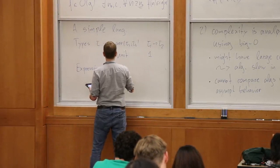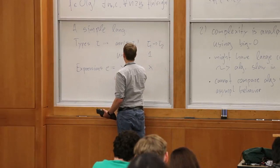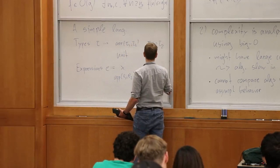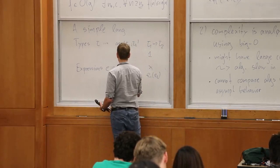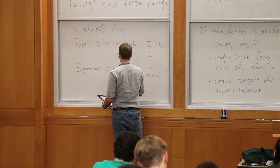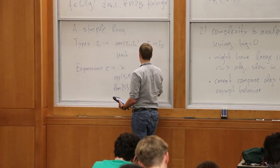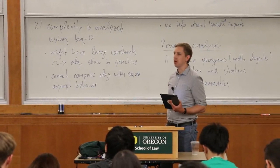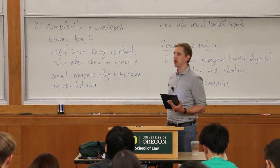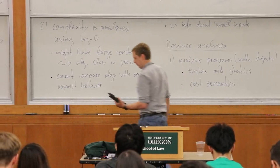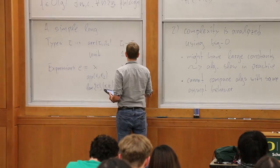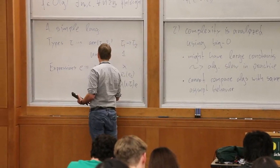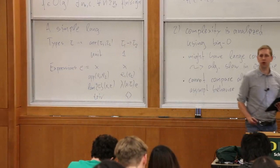We have variables, function application, and abstraction — lambda — where we always annotate it with the type tau. This type tau is the type of the argument; we add it there so types are unique. Otherwise, the identity function could be typed multiple ways. We also need unit, which I call 'triv' or the empty tuple.